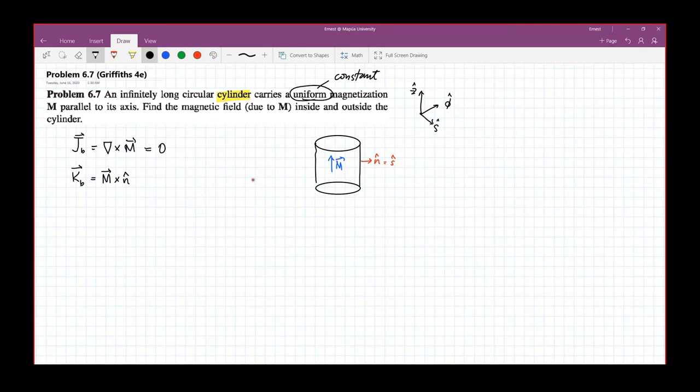So that means the only current that is present will be on the surface. Now, if the magnetization is constant, we can express m as some constant m, that's the magnitude of the magnetization. And let's say that is z hat. This is now equal to m times the cross product of z hat and s, so z cross s equals phi. So the resulting current along the surface, or bound current on the surface, will be along direction of phi hat.